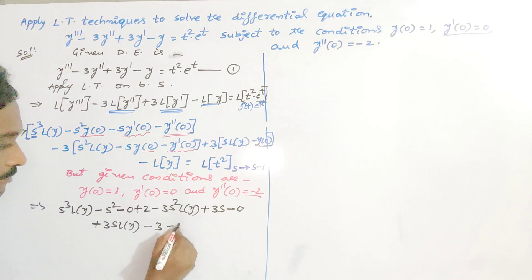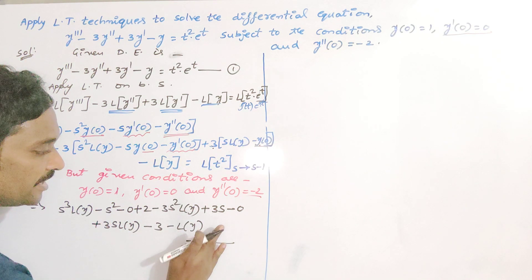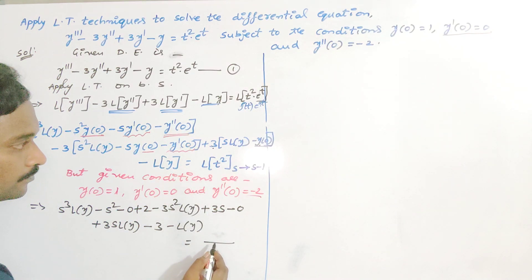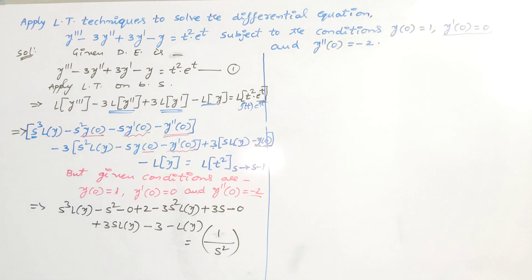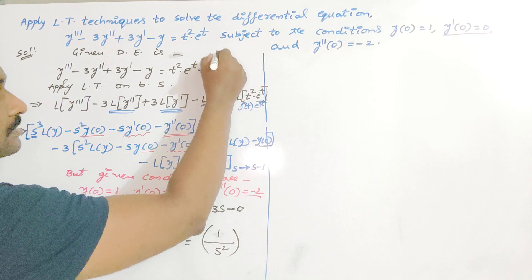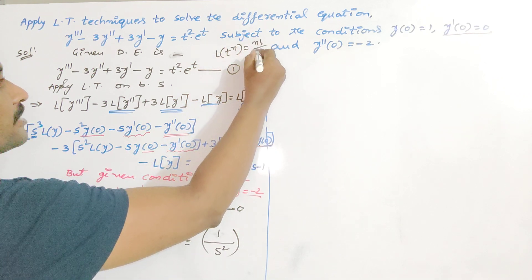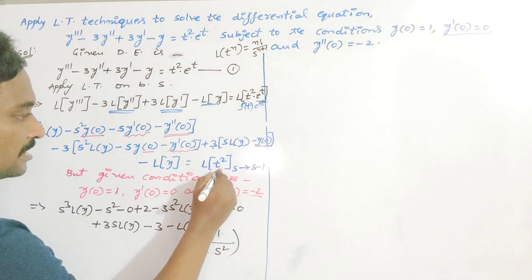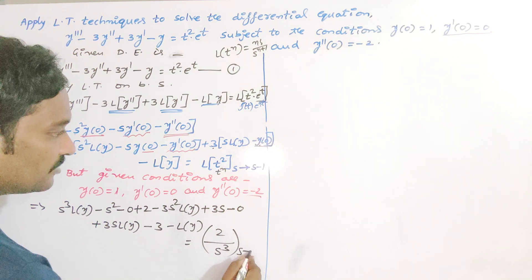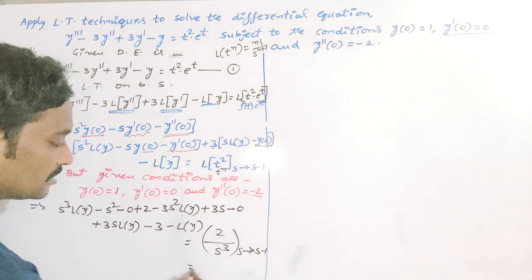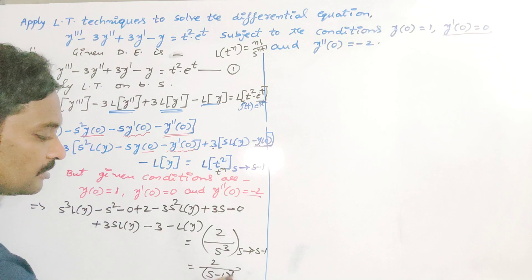For the right side, L{t squared} uses the formula L{t^n} = n! / S^(n+1). With n = 2, we get 2! / S³ = 2 / S³. Applying the first shifting theorem, we replace S by S minus 1, giving 2 / (S minus 1)³.